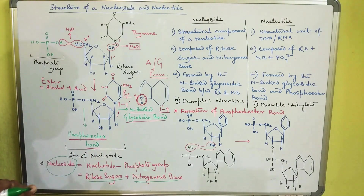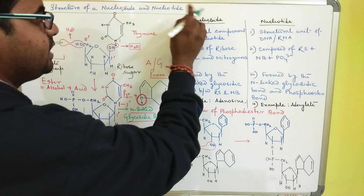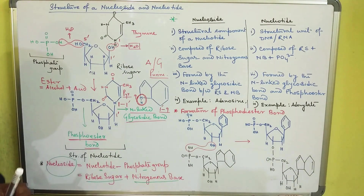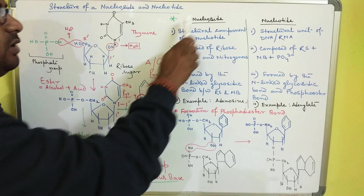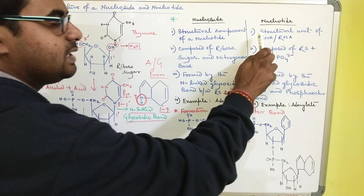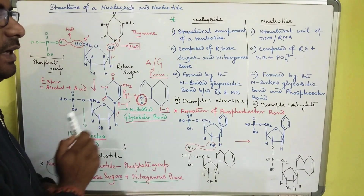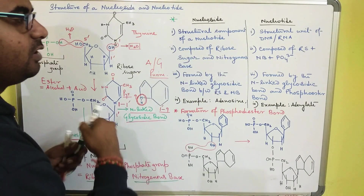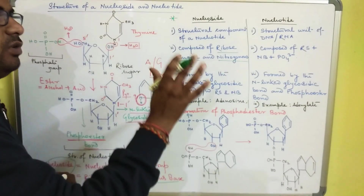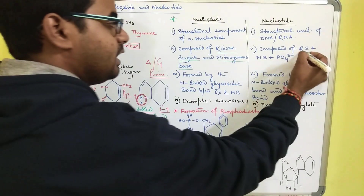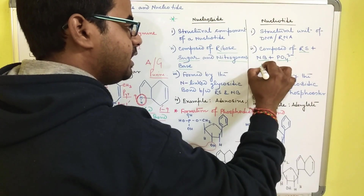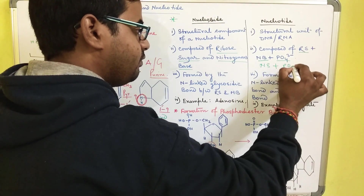For exam purposes, the key differences between nucleoside and nucleotide are: a nucleoside is the structural component of a nucleotide, while a nucleotide is the structural unit of DNA or RNA. A nucleoside is composed of two things — ribose sugar and nitrogenous base — while a nucleotide is composed of ribose sugar, nitrogenous base, and the phosphate group. In other words, nucleotide equals nucleoside plus phosphate group.